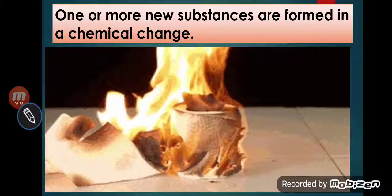The second characteristic: during a chemical reaction, one or more new substances are formed. You can see burning of paper in the figure. When paper burns, what is formed? Carbon dioxide gas, heat, light, plus ashes. So in a chemical reaction, two or more new substances are formed. Please note down: new substances are formed.